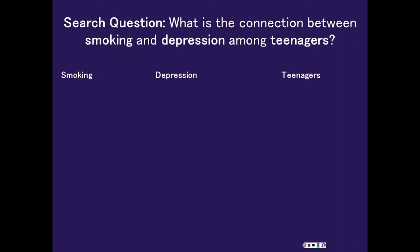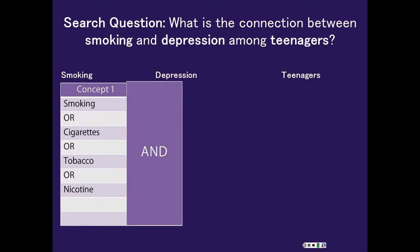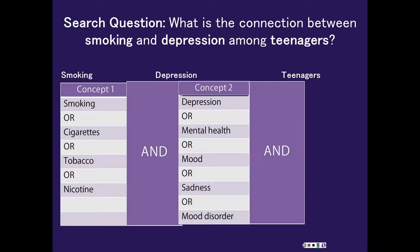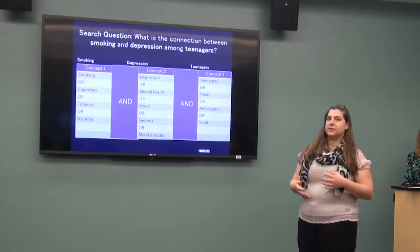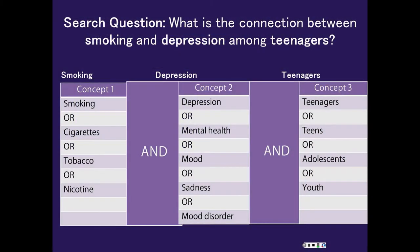Here's one example of a research question: What is the connection between smoking and depression among teenagers? I want to break down my topic into main ideas: smoking, depression, and teenagers. Then I develop keywords for each. For smoking: cigarettes, tobacco, nicotine. For depression: mental health, sadness, mood disorder, mood. For teenagers: teens, adolescents, youth. I can make this list and use these terms with Boolean operators — combining ideas with AND and using OR searching within each concept group.